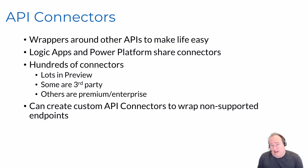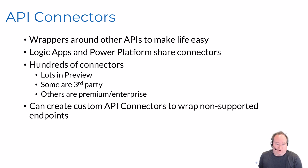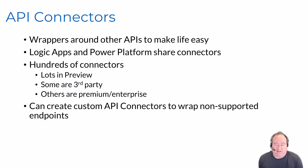If there isn't a connector for an API you need to interact with, you can create your own custom connectors - custom API connectors. It's very easy and straightforward to do. This gives you a consistent implementation path for that connector that you can then share across everyone in your enterprise working with logic apps, so they can all interact consistently with those non-supported destinations.